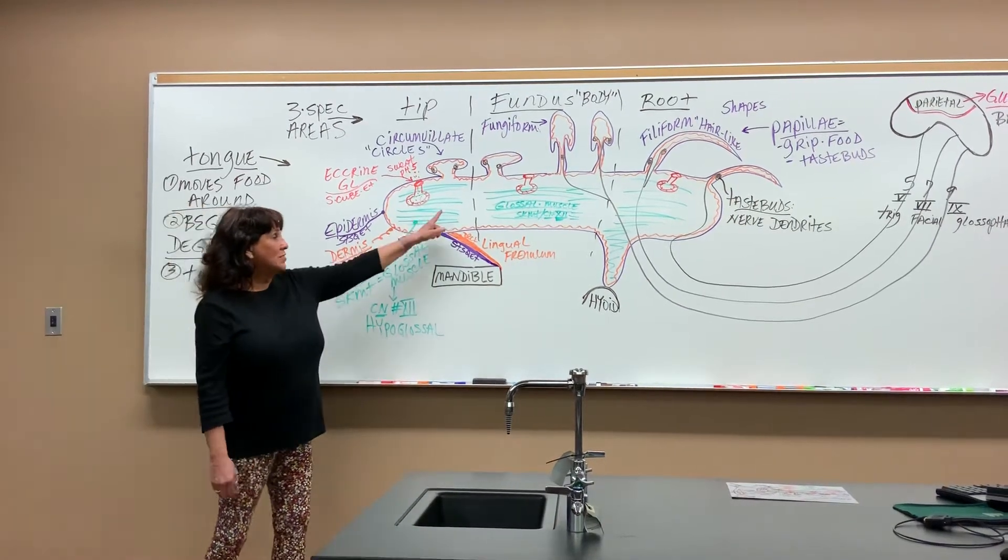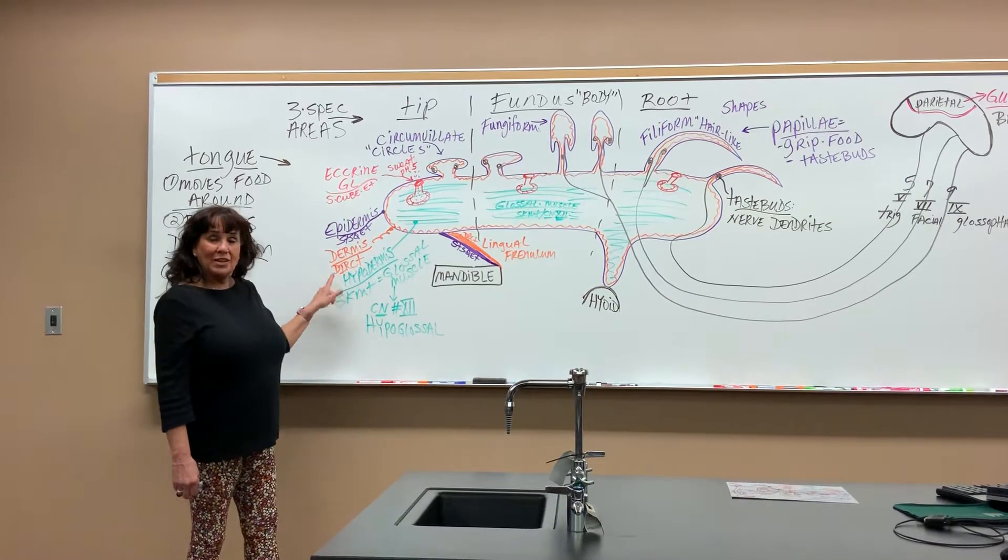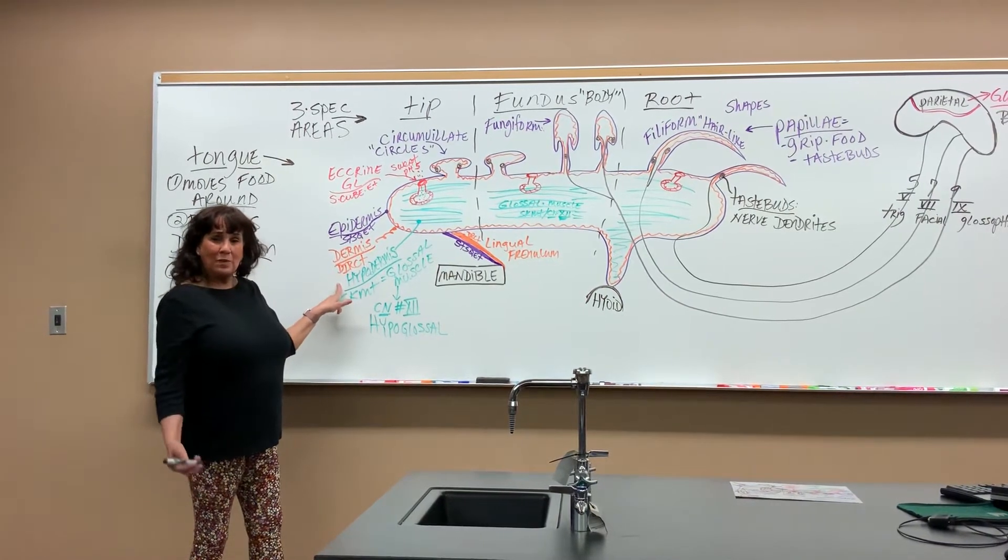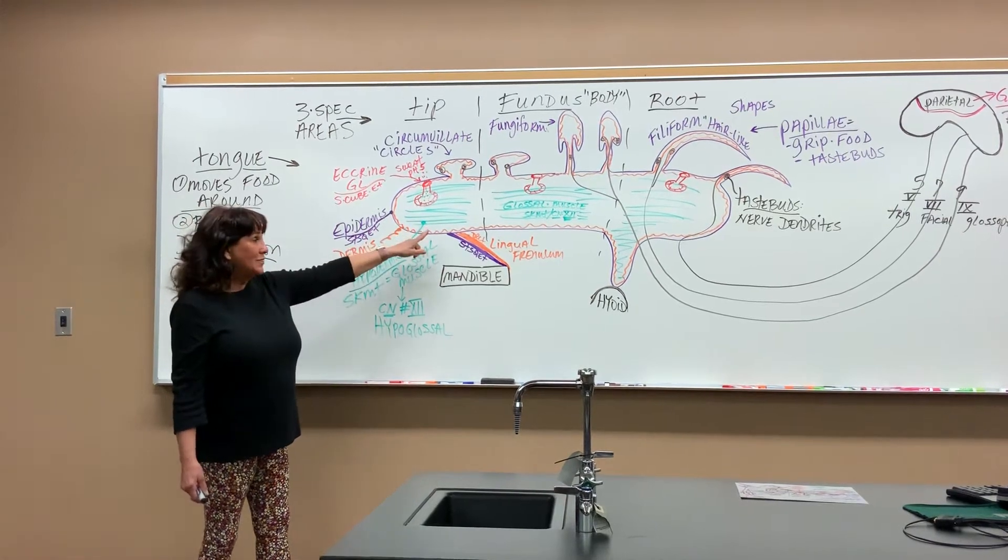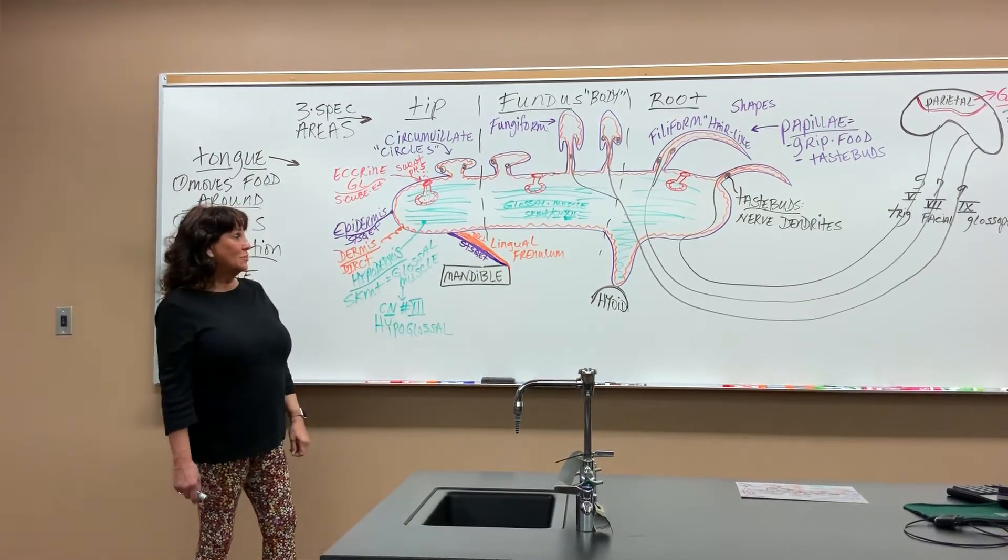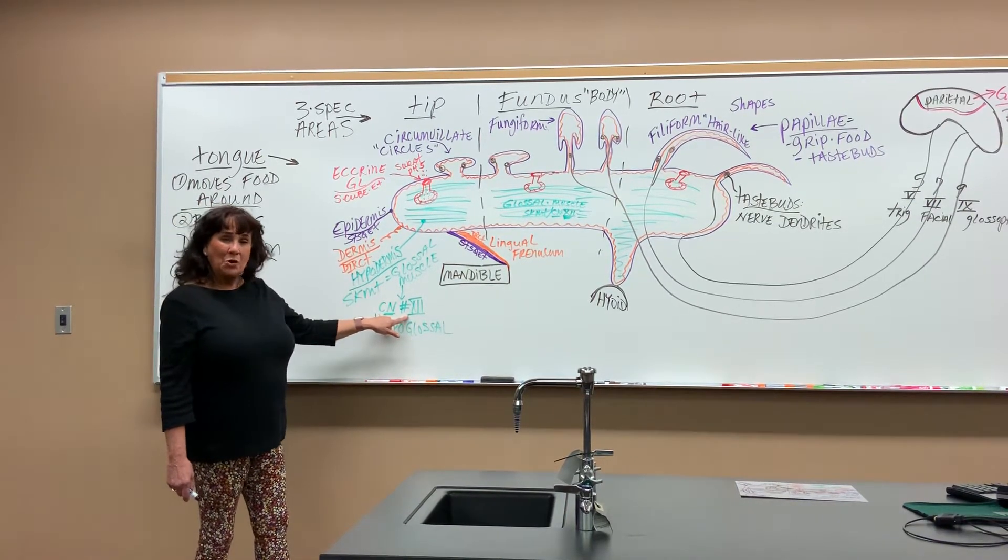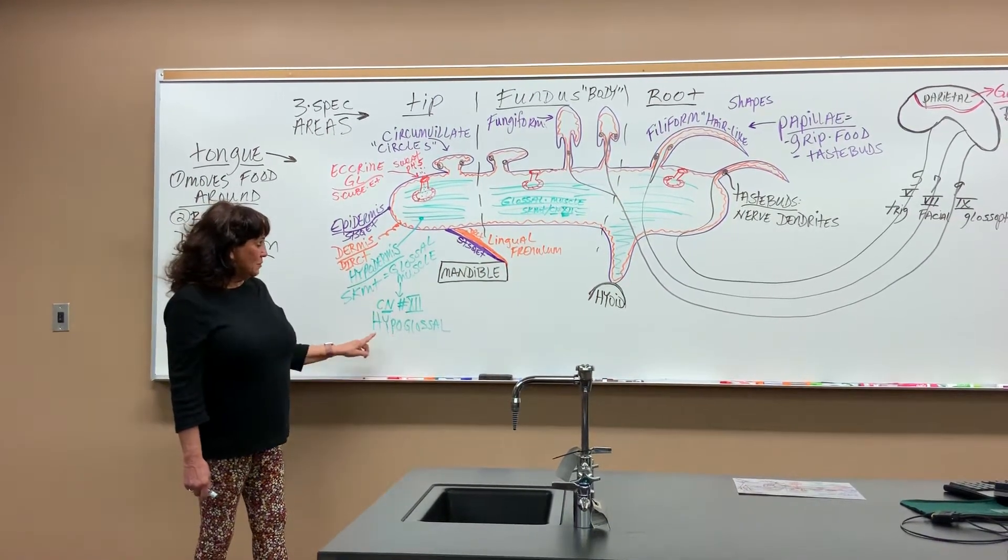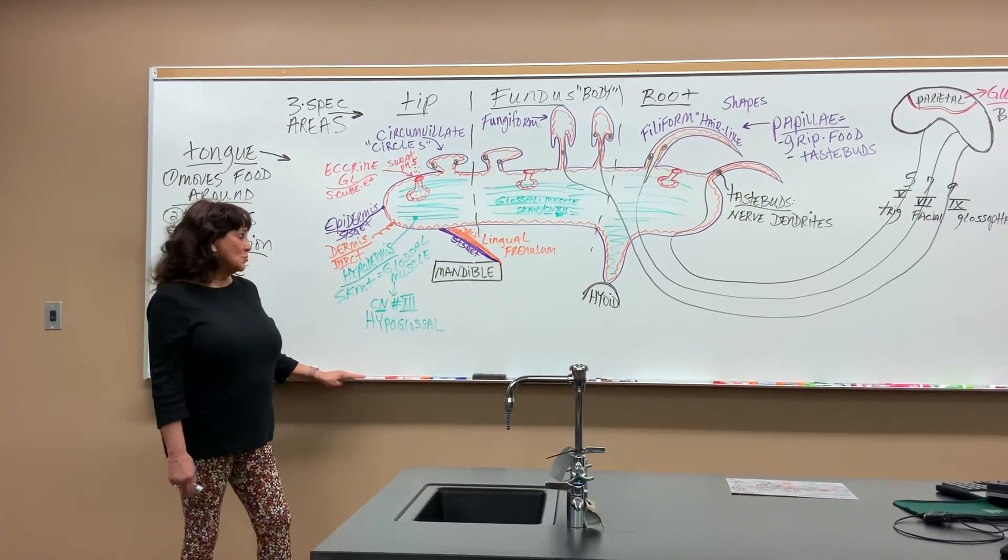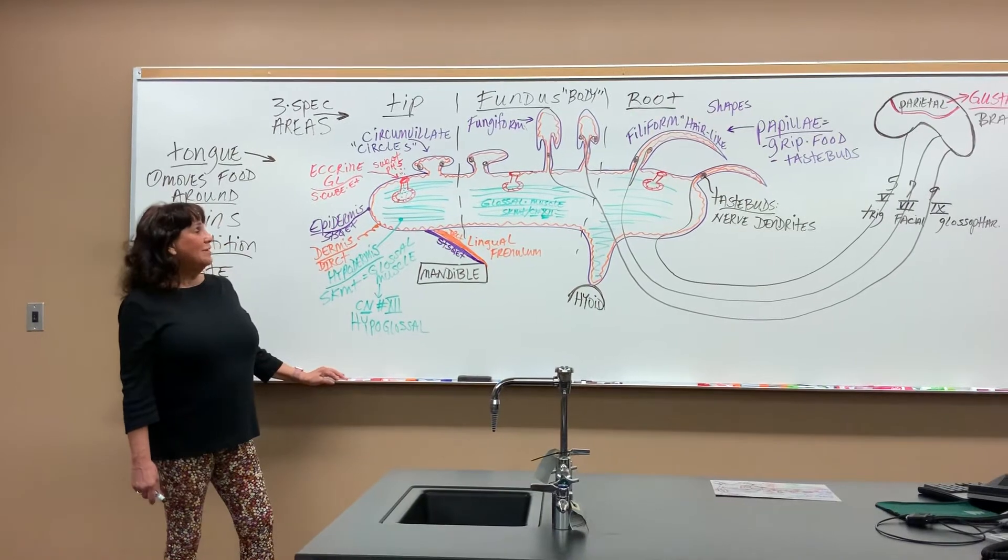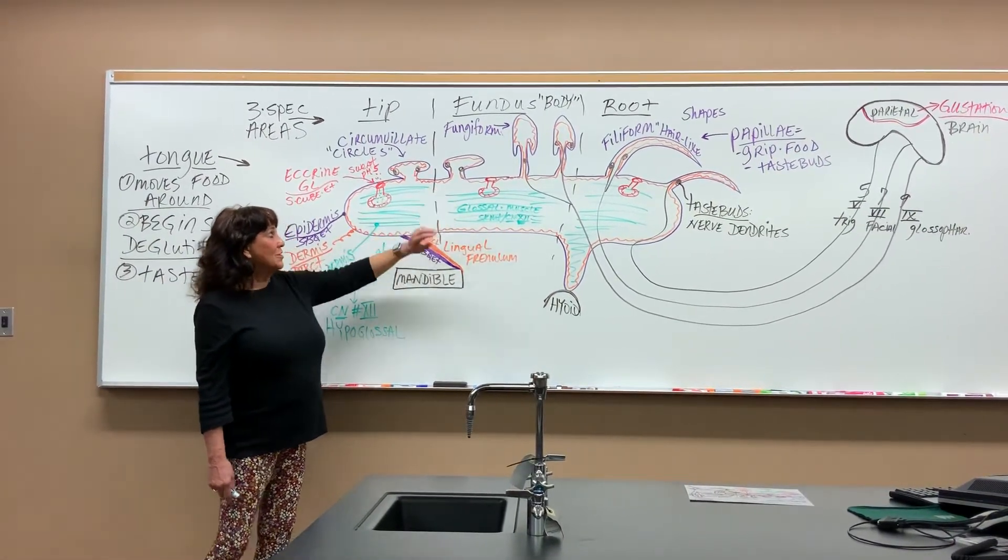The glossal muscle is actually the hypodermis. The hypodermis is usually made of adipose connective tissue, but here it's replaced by glossal muscle, skeletal muscle. It's controlled by cranial nerve number 12, which is called the hypoglossal nerve. That's the basic organization of what the tongue's made out of.